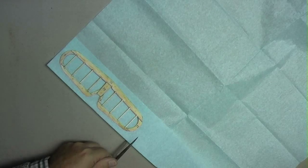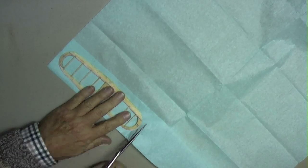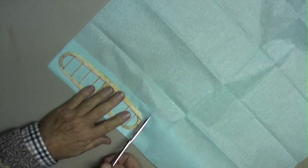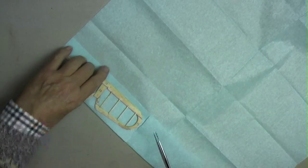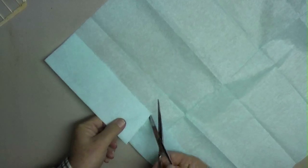The next step was to cut the tissue slightly over size and soak it in water, blot off any surplus water and the damp tissue could then be gently laid in position and the edges doped over.